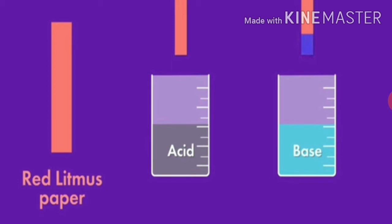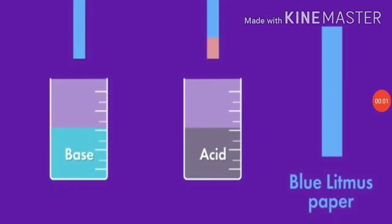In this way we can test whether a solution is acidic or basic. If we have to test an acidic solution, blue litmus paper turns red in acidic solution, so we will use blue litmus paper. In basic solution, blue litmus paper remains blue. In this way we can identify whether the given solution is acidic or basic by the help of the litmus paper test.